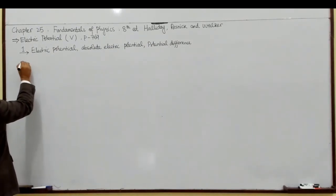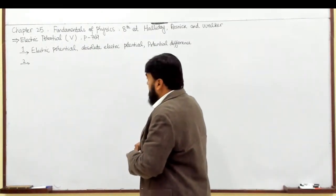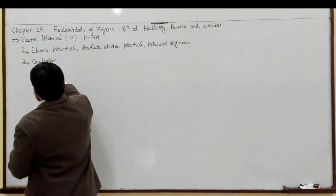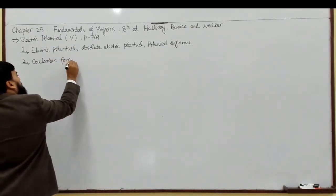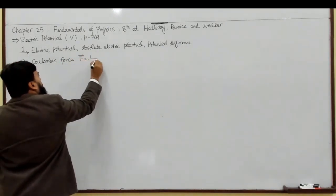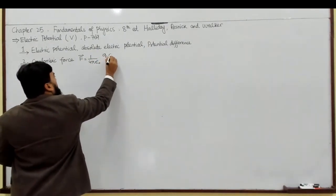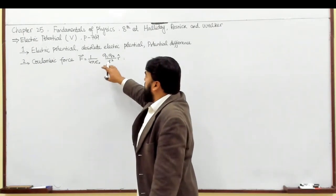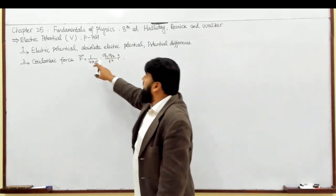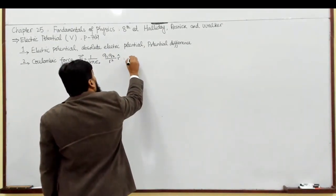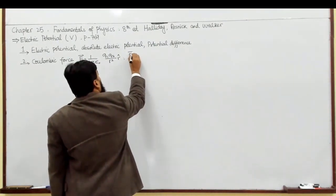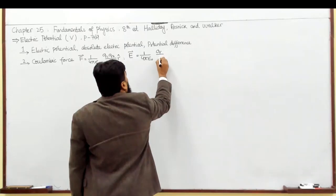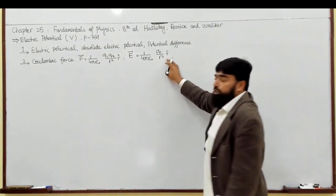دوسرا question یہ ہے کہ جب ہمیں دو یا دو سے زیادہ چارجز کے درمیان interaction force ہے تو وہ ہمیں Coulombic force دے رہا ہے، جو کہ F = 1/4πε₀ × q₁q₂/r² r̂ ہے۔ جب Coulombic force دو یا دو سے زیادہ چارجز کے درمیان interaction force لے رہا ہے۔